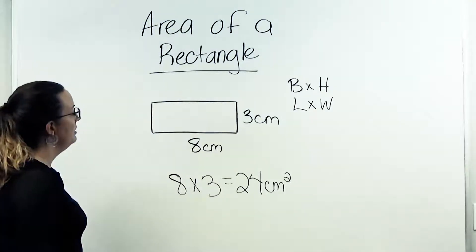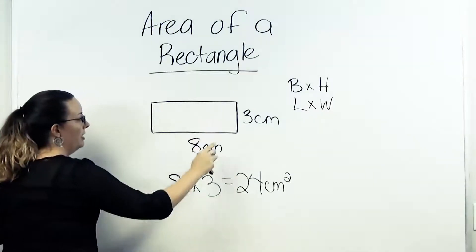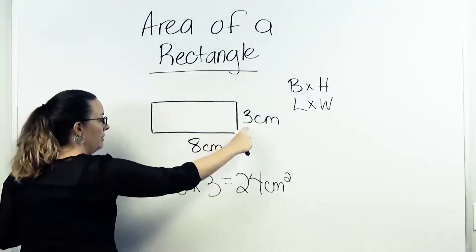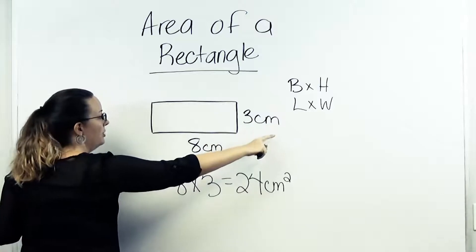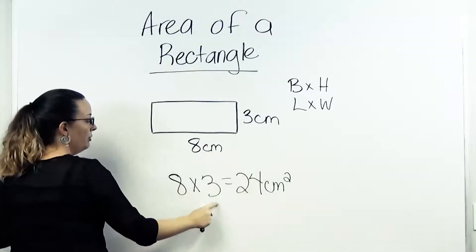So let's look at this example. Our length here is 8 centimeters, or you can also call it the base, and then our height or our width would be 3 centimeters. So we would multiply these two numbers together, 8 times 3, which would give us 24.